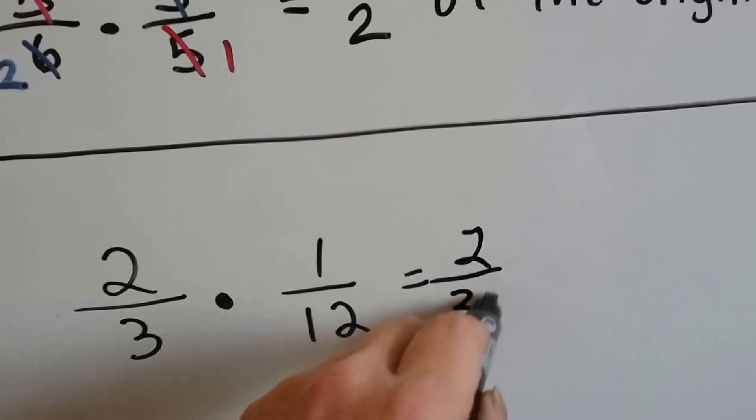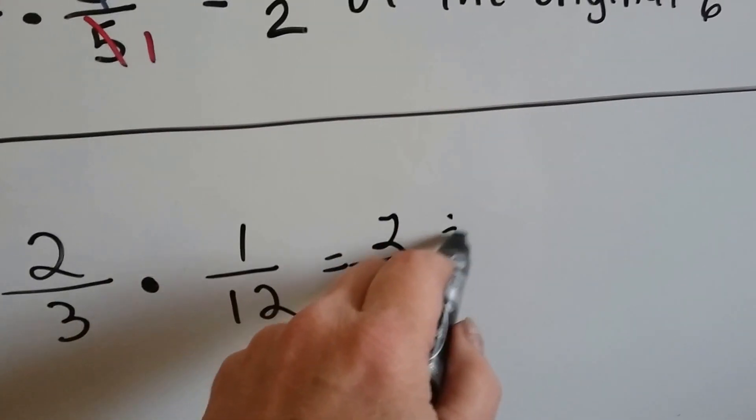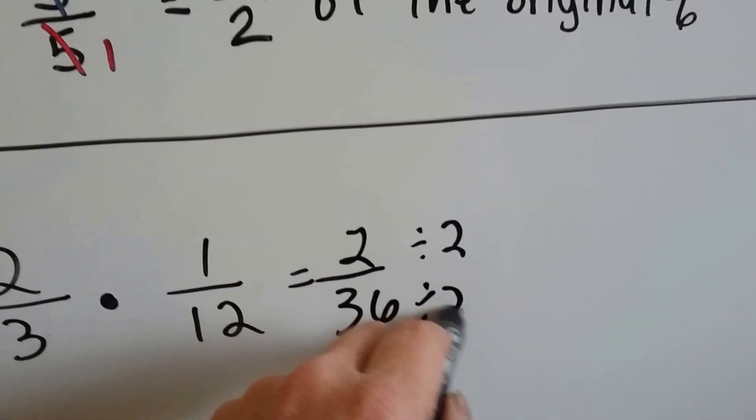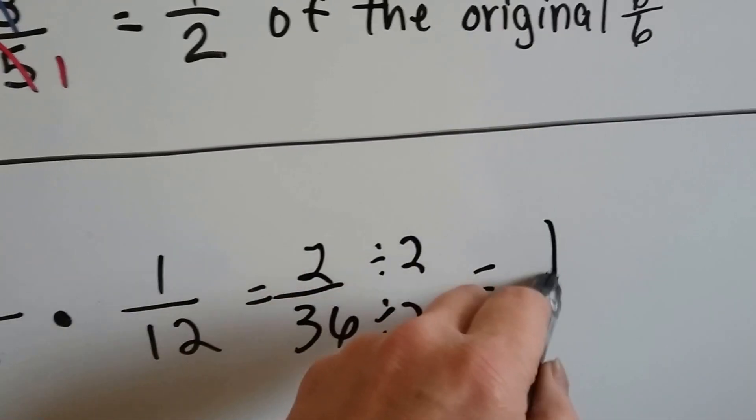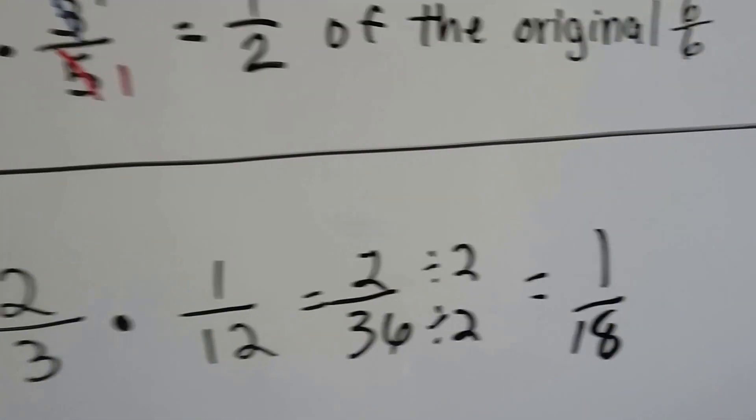And now we have to simplify this more and divide by two for each of them. Two goes into two one time, two goes into 36 eighteen times, so we get 1/18.